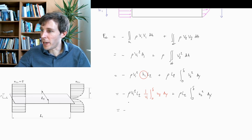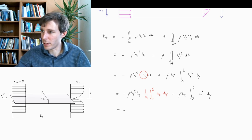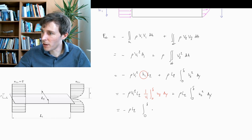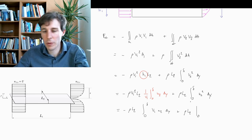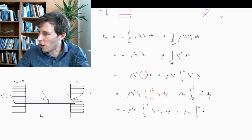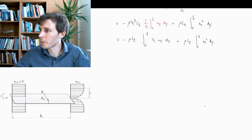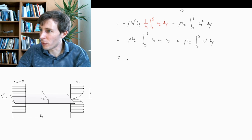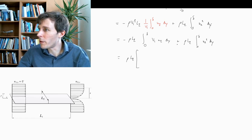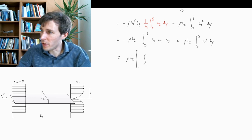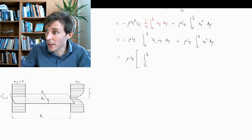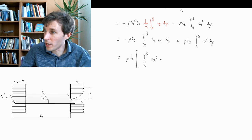After substituting and simplifying — v1 squared divided by v1 gives v1 inside the integral — we have: rho·L2 times the integral from 0 to delta of v1·u2 dY, plus rho·L2 times the integral from 0 to delta of u2 squared dY. Combining these into one integral gives: F_net = rho·L2 times the integral from 0 to delta of [u2 squared minus v1·u2] dY.